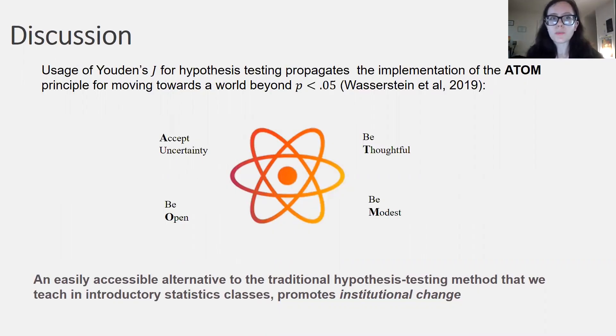Finally, I want to give one more plug for my method by pointing out how it is in line with previous researchers' recommendations. Specifically, including a neutral zone for inconclusive results propagates the acceptance of uncertainty and the explicit incorporation of contextual error analysis propagates big T thoughtful research, both of which were recommended in a recent article by one of the leading statisticians in the field, Wasserstein.